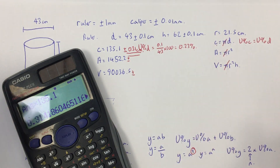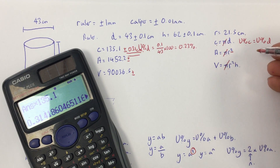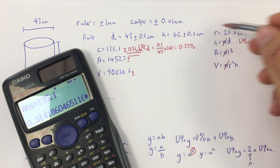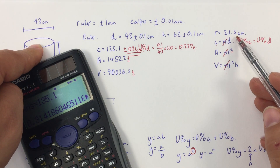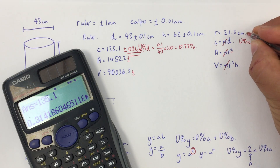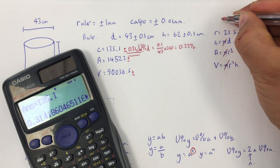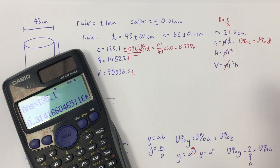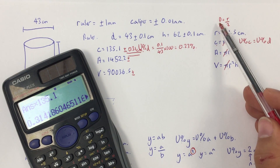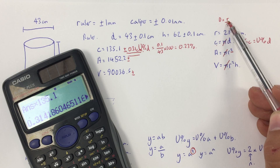Now for the area: the equation is area equals pi times radius squared. I need the percentage uncertainty in my radius. Since radius equals diameter divided by 2, and dividing by 2 is just a number with no uncertainty, the percentage uncertainty in my diameter is the same as the percentage uncertainty in my radius.